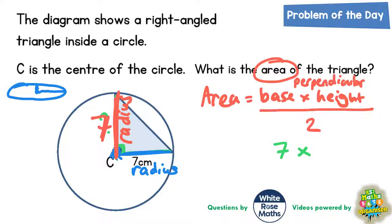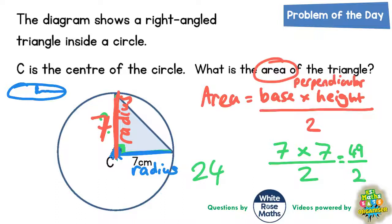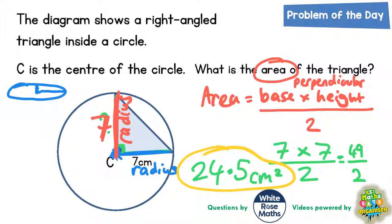If the radius is 7 along the bottom, the radius is 7 up the side, so the height of the triangle is also 7. We need to do 7 times 7 and then divide by 2. Well, 7 times 7 is 49, so we need 49 divided by 2. The easiest way is to do 48 divided by 2, which is 24, and the extra 1 divided by 2 gives 0.5. So the final answer is 24.5 centimetres squared.